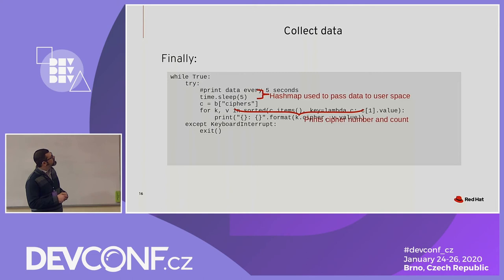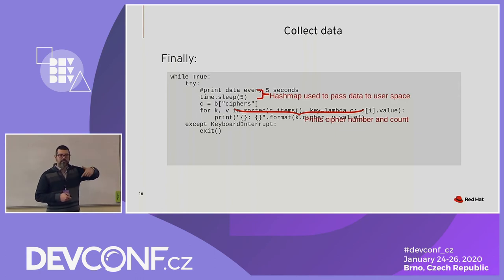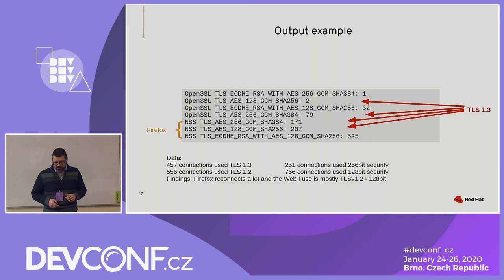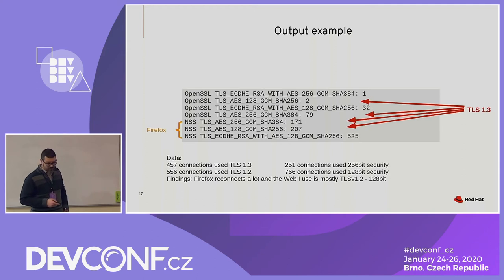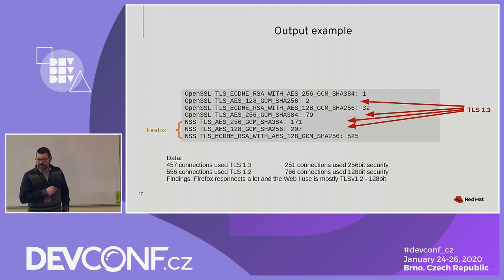Finally, I had a simple program that gets this hash map and goes through it every five seconds, printing out what's in the kernel — what the counters say. This is an example I extracted from my computer that was running overnight one weekend. I also instrumented it to look at the NSS library, and printed whether OpenSSL or NSS data was being recorded.